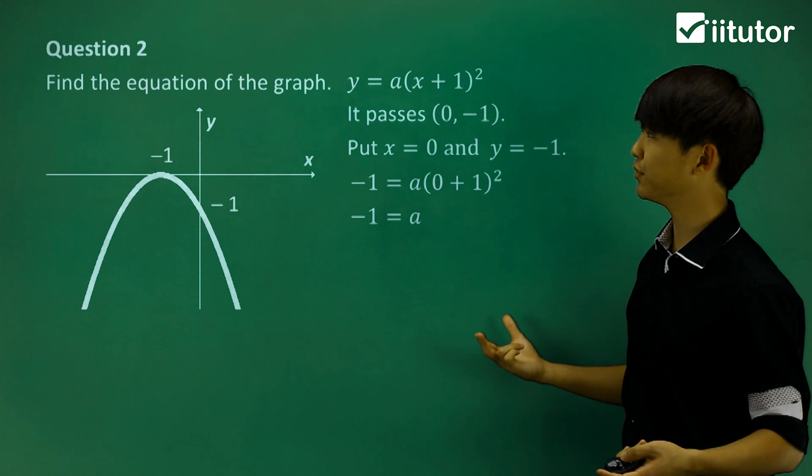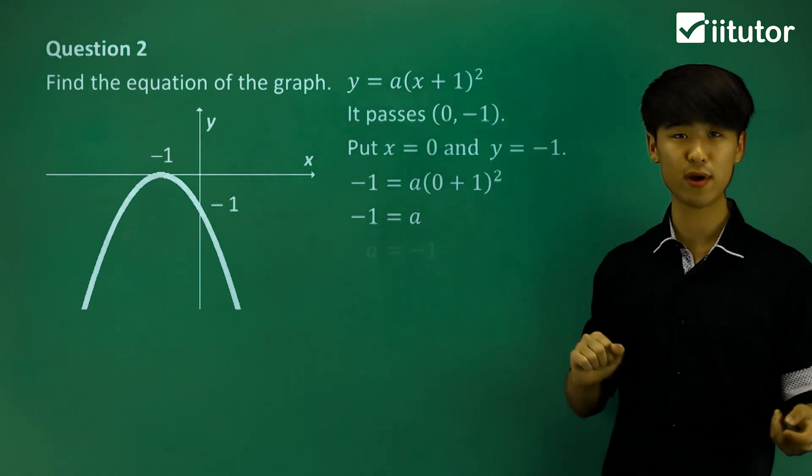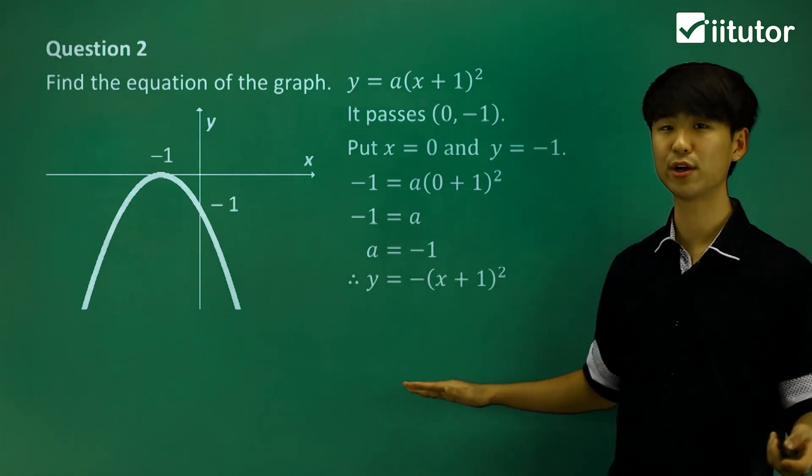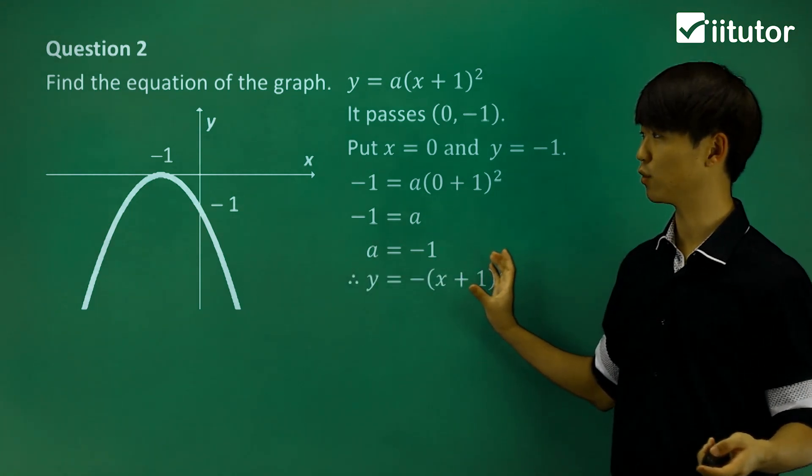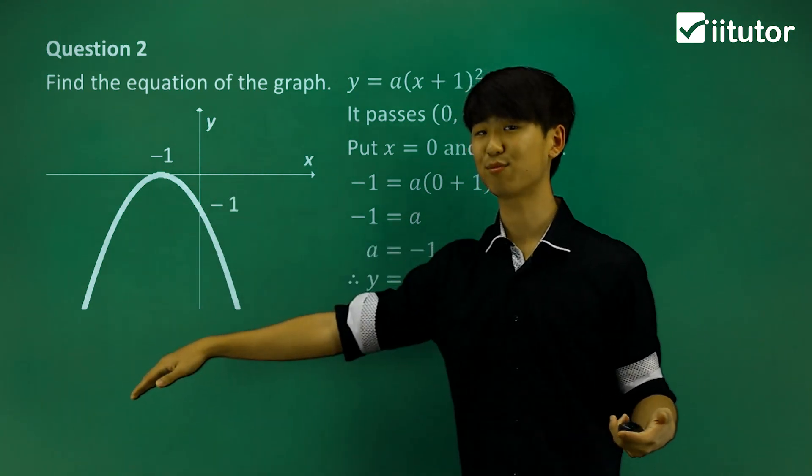Now what do we do? Well, what I want to do is put a is equal to negative 1 back into my equation and rewrite the whole equation. So a is equal to negative 1, rewrite it all, and this is going to be my equation. Which sort of makes sense because there is a negative at the front and it is an upside-down parabola.